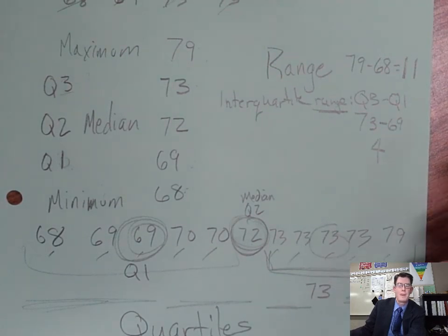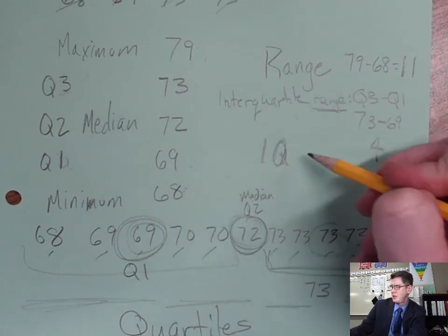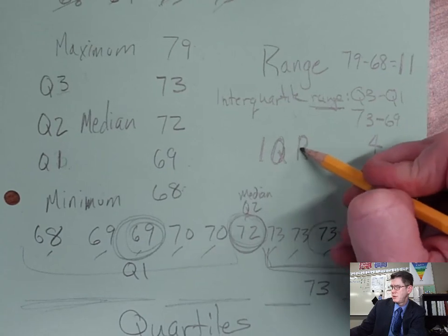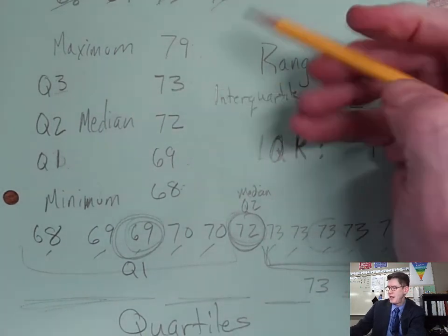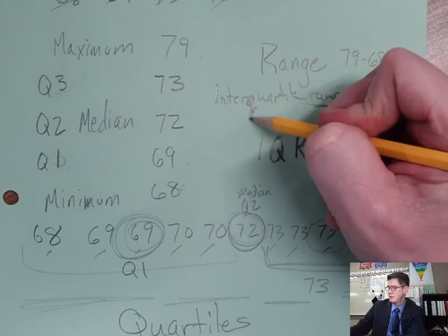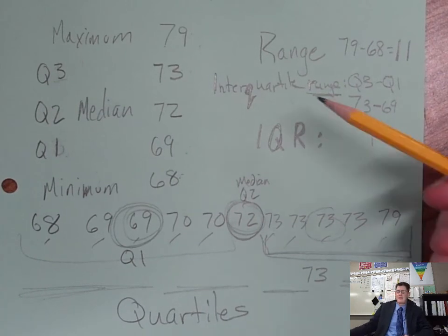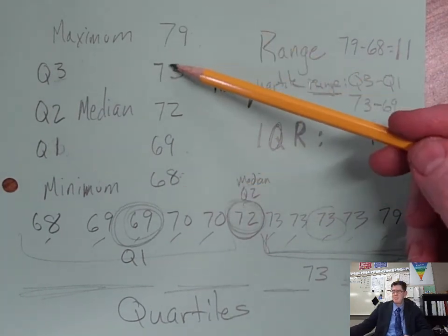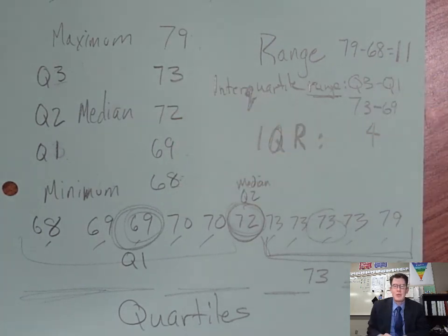It's four. You'll see this written as the IQR, the interquartile range, IQR. That's how you find these numbers: the maximum, the minimum, these quartiles we call them, and then ranges. When you want the range of something, you take the greatest and subtract the smallest.